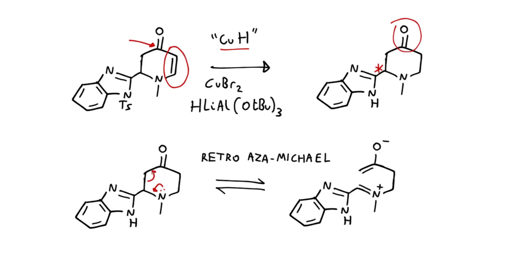And of course when that closes, there's no bias on whether the benzimidazole ends up up or down. So the stereocenter at this position is actually able to scramble.